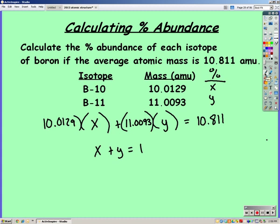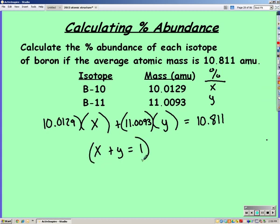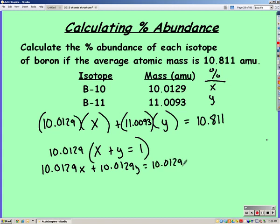So to solve with elimination, I'm going to have to multiply my x plus y equals 1 by some value so I can subtract them and they cancel out. I always just multiply by the first mass, which is 10.0129. So distributing that out, I get 10.0129x plus 10.0129y equals 10.0129. And this middle equation I can now get rid of, since I've rewritten it.